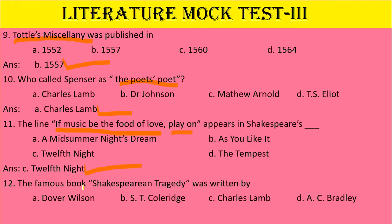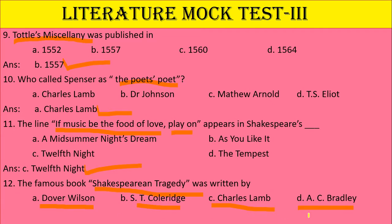Question 12: The famous book 'Shakespearean Tragedy' was written by — Dover Wilson, Coleridge, Charles Lamb, or A. C. Bradley? Dover Wilson and A. C. Bradley are great critics of Shakespearean tragedies. Wilson Knight, Dr. Johnson, S. T. Coleridge and Charles Lamb also wrote about Shakespeare's plays. The answer is either A or D — the right answer is A. C. Bradley, the author of 'Shakespearean Tragedy', a critical work.